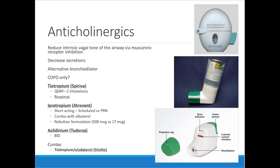Anticholinergic medications aren't well defined for use in pregnancy, so they aren't generally recommended in that context. Historically they've been very COPD-focused, but data from recent years shows they're actually effective for asthma too, so they've been added to asthma guidelines as a third-line option. For COPD, anticholinergics are considered a first-line option — COPD patients will typically start on either an anticholinergic or a long-acting beta agonist as initial therapy.